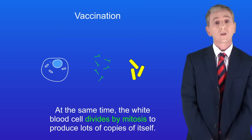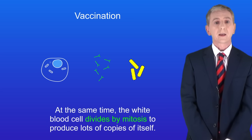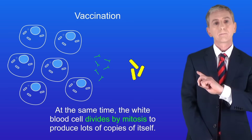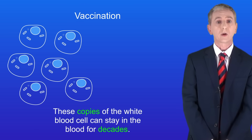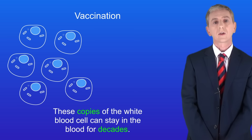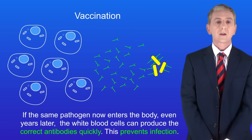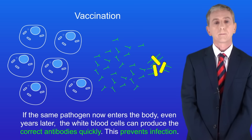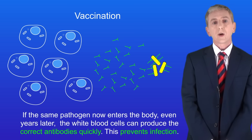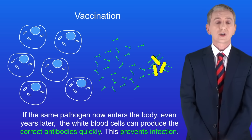At the same time the white blood cell divides by mitosis to produce lots of copies of itself. These copies of the white blood cell can stay in the blood for decades. If the same pathogen now enters the body even years later, the white blood cells can produce the correct antibodies quickly and this prevents infection. So vaccines directly protect us from infection by pathogens.